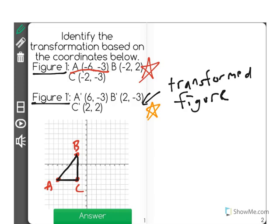Now figure 1' let's go ahead and place these. I have positive 6, negative 3, is point A', then I have positive 2, negative 3. And I have positive 2, positive 2.